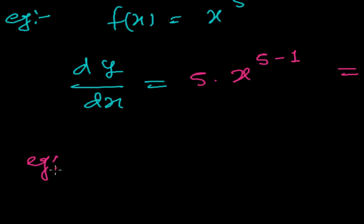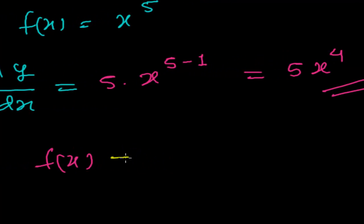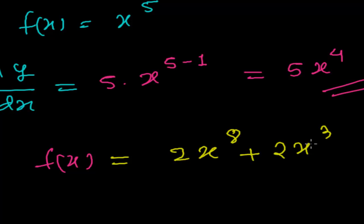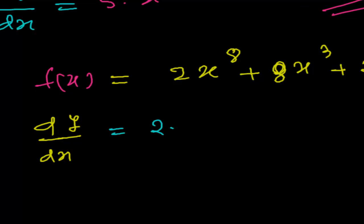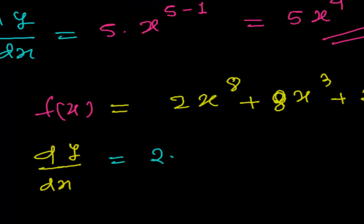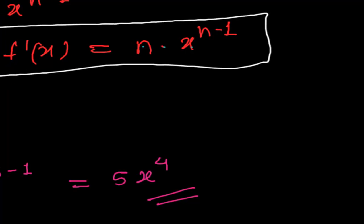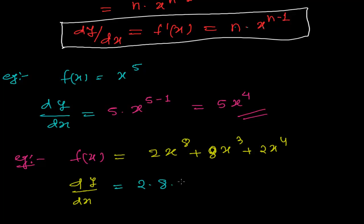Here is another example. Suppose f(x) = 2x^8 + 2x^3 + 2x^4. To find dy/dx, we apply the power rule to each term. For the first term, the coefficient is 2 and n equals 8, giving 2 times 8 times x to the power 8 minus 1. For the second term, n equals 3, giving 2 times 3 times x to the power 3 minus 1.